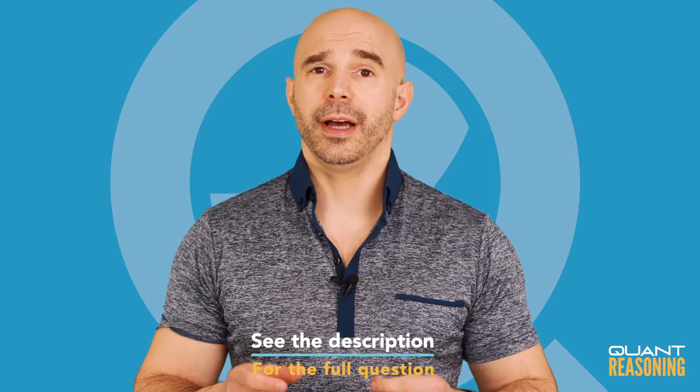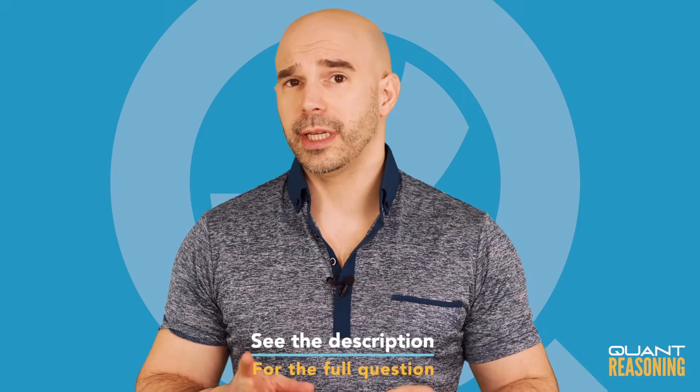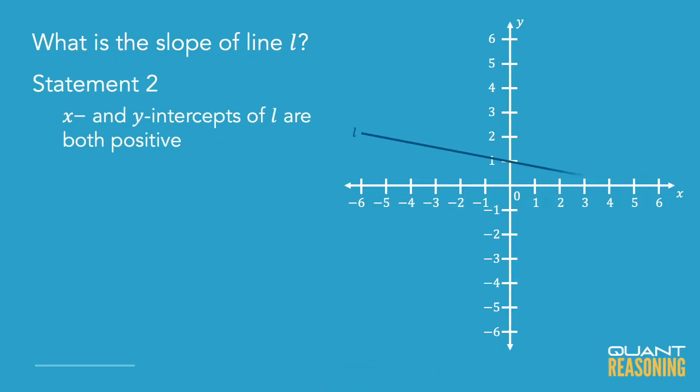We're looking for the slope of a line, and I'll start with statement 2 because I think it doesn't stand a chance on its own. Knowing that the line crosses the y-axis above the origin and the x-axis to the right of the origin doesn't determine what the slope will be.